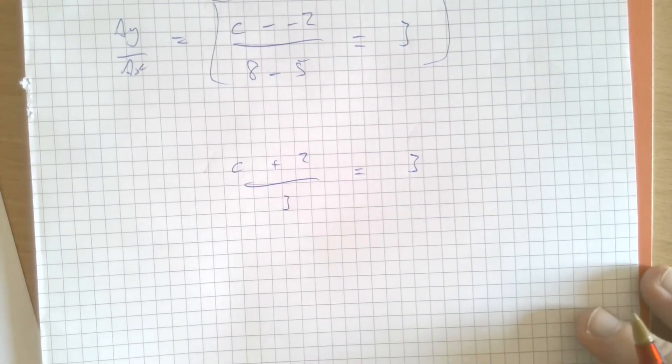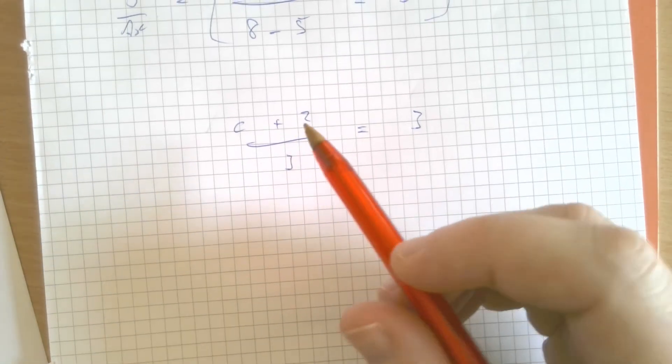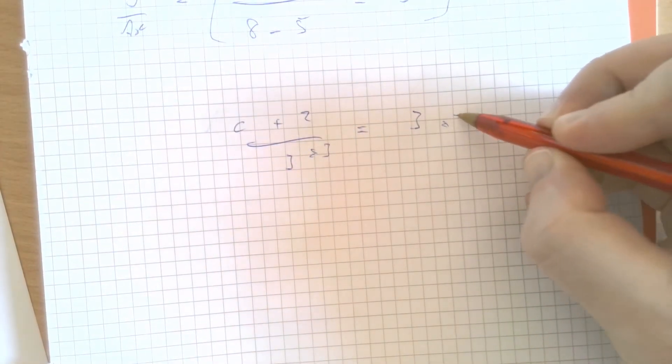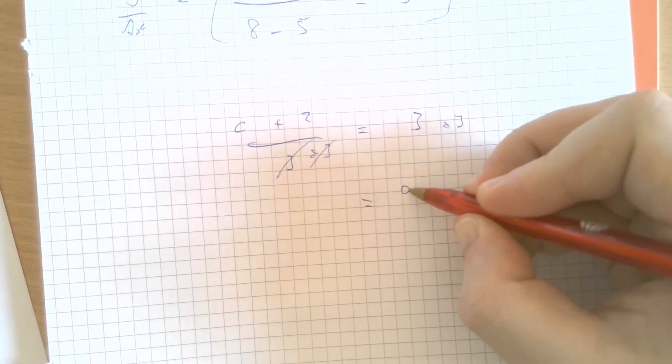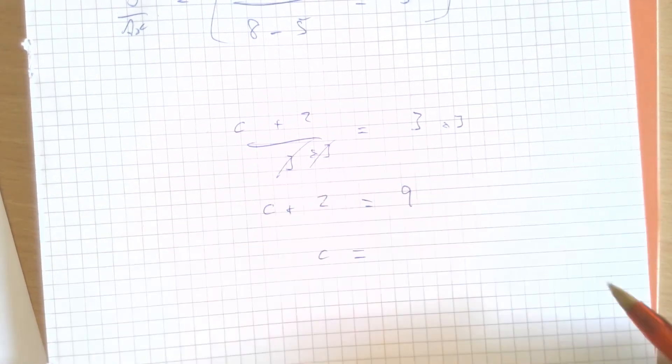Starting to see how we're going to get to this mysterious letter c? Not so mysterious anymore, is it? We can get rid of this 3 on the denominator by multiplying both sides by 3, thus cancelling that denominator, and then 3 times 3 on the right-hand side is 9. c plus 2 equals 9.